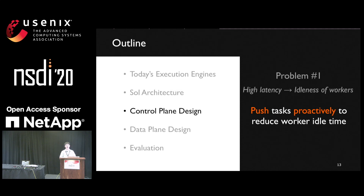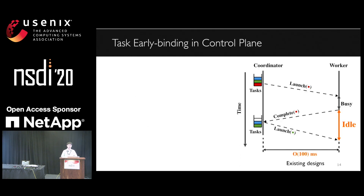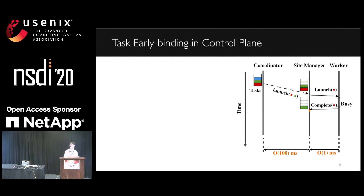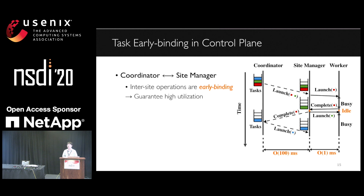With this federated system architecture, we now talk about how to design an efficient control plane to tackle high latency networks. We advocate early binding of tasks because we want to push tasks to the remote site so that we can hide the expensive scheduling latency. In existing designs, the coordinator interacts with the remote worker directly, leading to idleness of workers. Instead, we introduce a site manager to bring tasks close to workers. The coordinator can push multiple tasks to the remote site manager, and when a task completes, the site manager can launch a new task from its local queue.